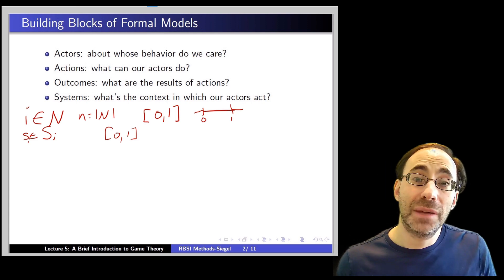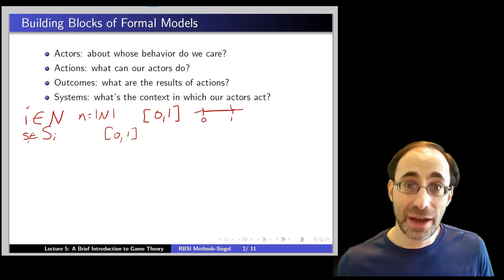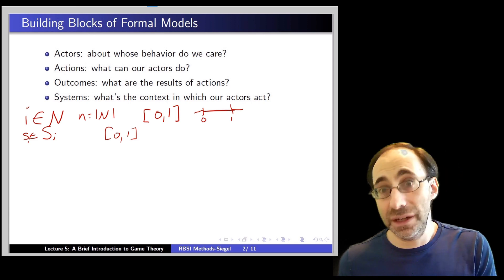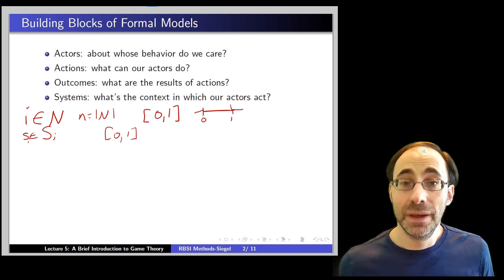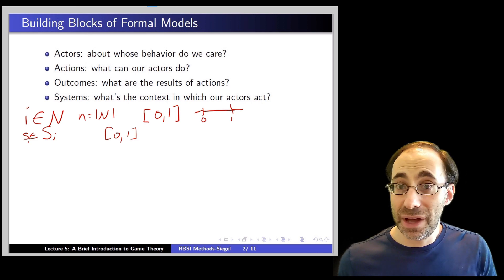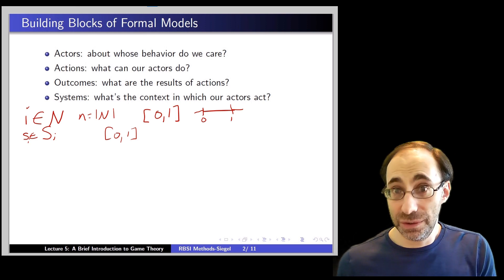In this case, my strategy space, my action space, is continuous because I can locate anywhere between zero and one. So, again, actions can be discrete. They can be, I can do A or B or C or cooperate or defect or what have you. Or they can be continuous. I can choose any policy between zero and one. In all cases, though, the building block of the model this represents are the set of things each actor in your model can do.